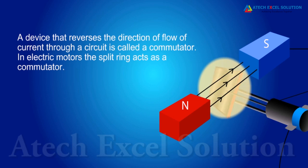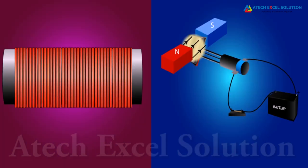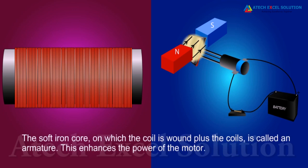The commercial motors use an electromagnet in place of permanent magnet, large number of turns of the conducting wire in the current-carrying coil and a soft iron core on which the coil is wound. The soft iron core on which the coil is wound plus the coils is called an armature. This enhances the power of the motor.